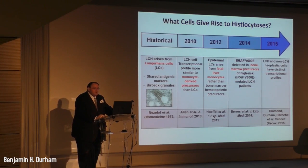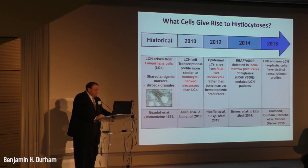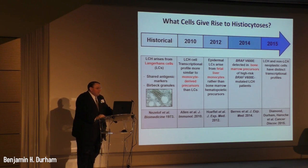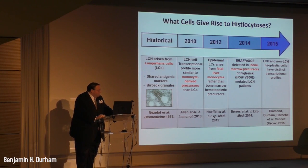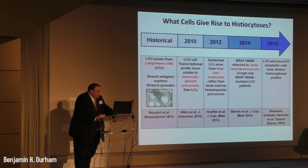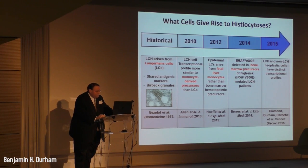One of the burning questions currently is what cells actually give rise to histiocytoses. About 40 years ago, LCH was found to arise from Langerhans cells, for two reasons: Langerhans cells and LCH cells both shared antigenic markers and had Birbeck granules on electron microscopy. This was believed for about 40 years.